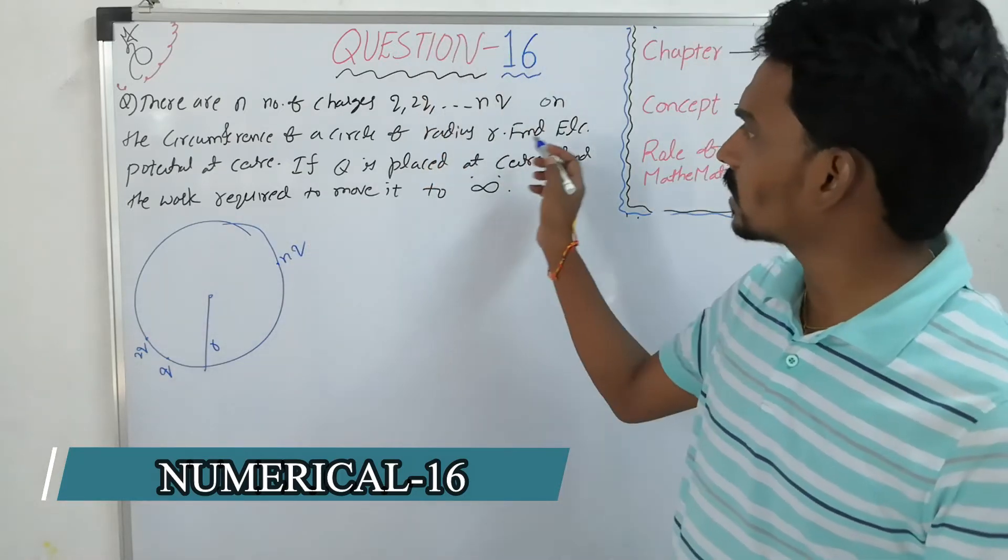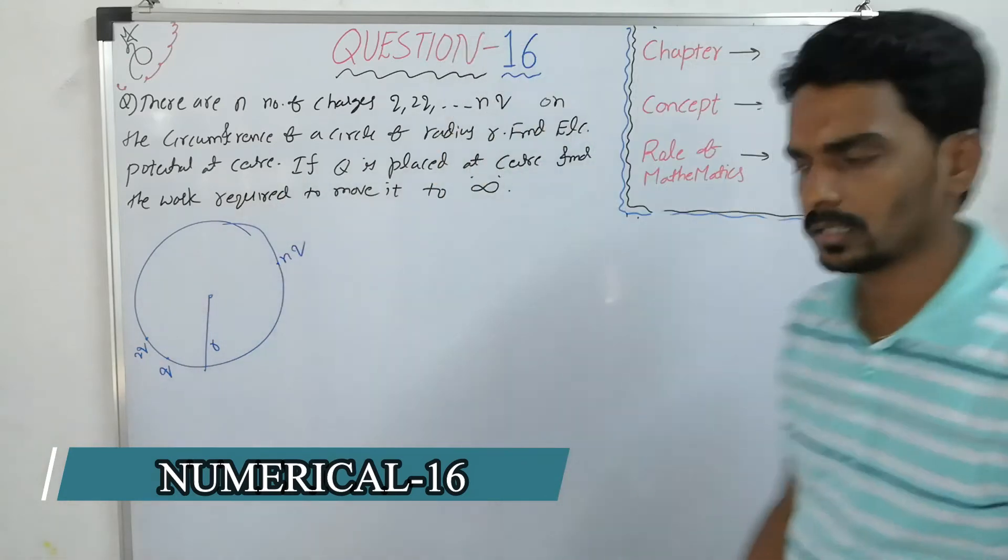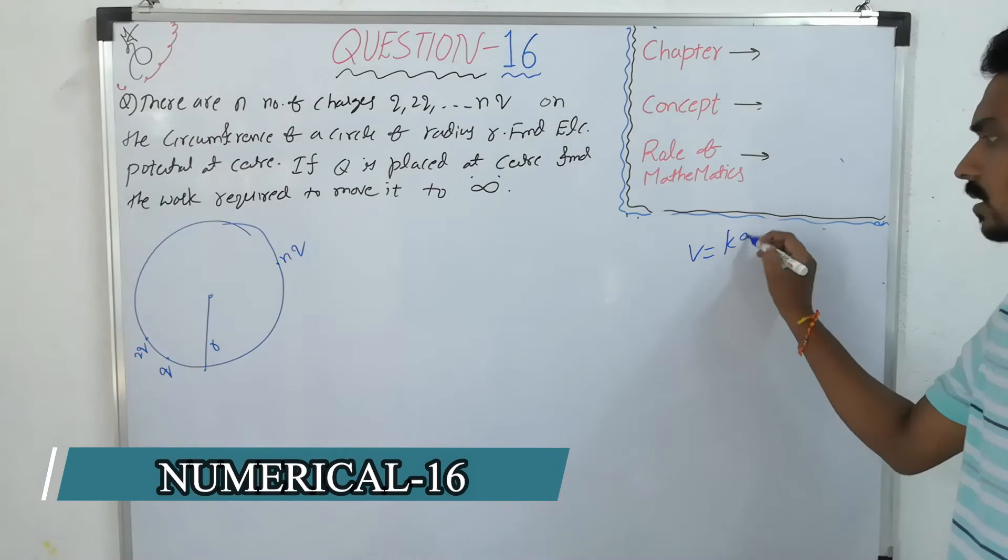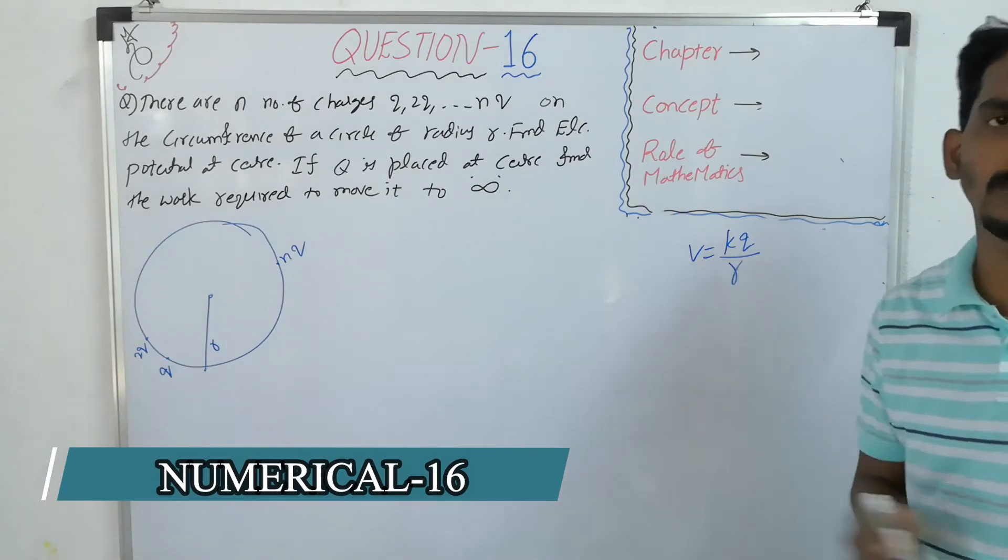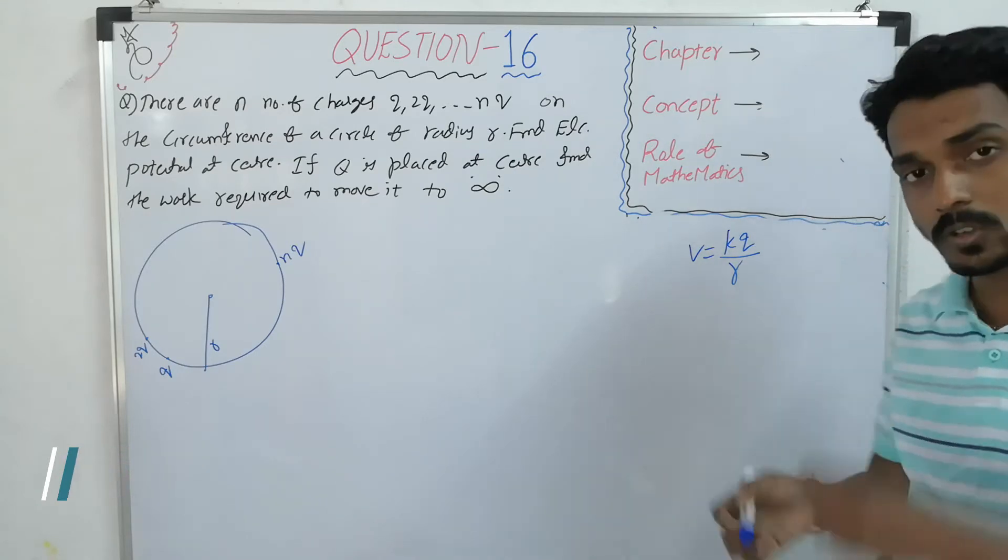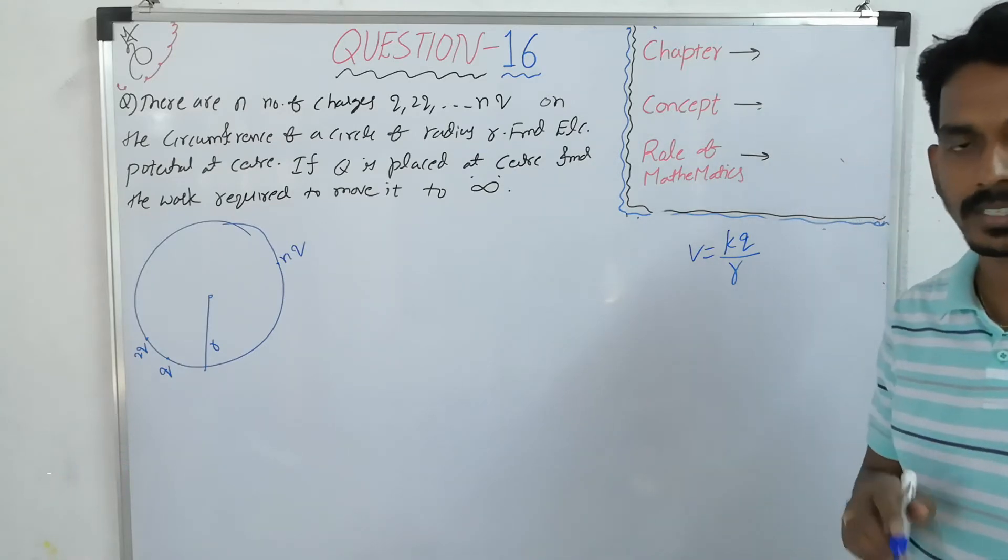So they are asking: find electrostatic potential at the center. What is the electrostatic potential due to a point charge at any distance? KQ by R. So here, the electrostatic potential is KQ by R, right?